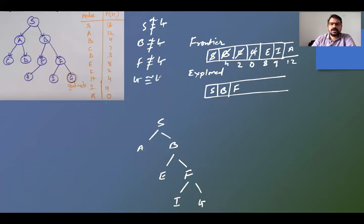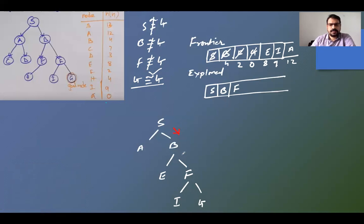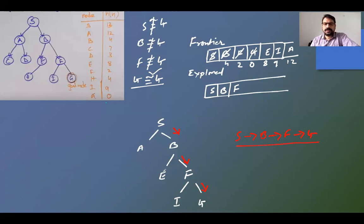G equals the goal node — yes! This is our solution. The path from S to G is: S → B → F → G. This is how we reach the goal using best first search, which is based on the evaluation function and heuristic values.